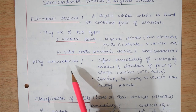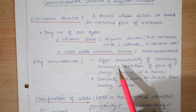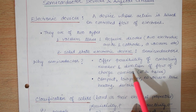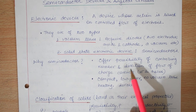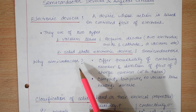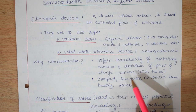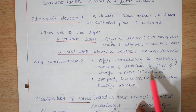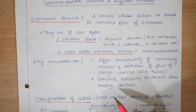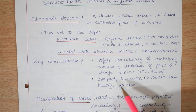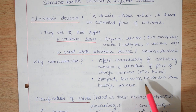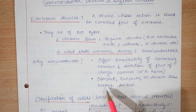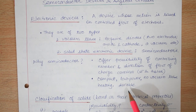Why do we need semiconductors? Semiconductors offer the possibility of controlling the number and direction of flow of charge carriers. When we use semiconductors, we can control both the number of electrons and the direction of their flow. Semiconductors are compact devices, they consume low power, they don't have vacuum tubes so they are not bulky, their heating effect is low, and they are quite durable.